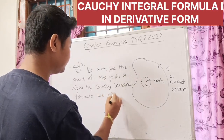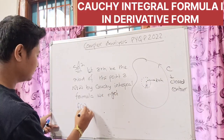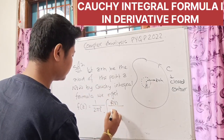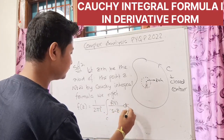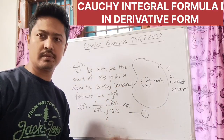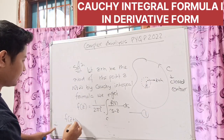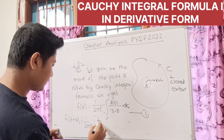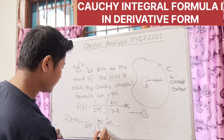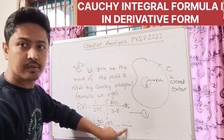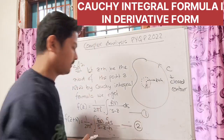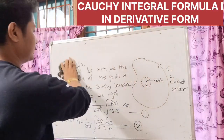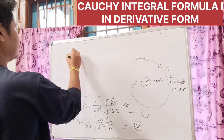So we get: f of z equals 1 by 2πi times integration over the closed contour C of f(s)ds divided by (s minus z) — call this equation number 1. Again, for the neighboring point z plus h, f of z plus h equals 1 by 2πi times integration over the closed contour C of f(s)ds divided by (s minus z minus h) — call this equation number 2.